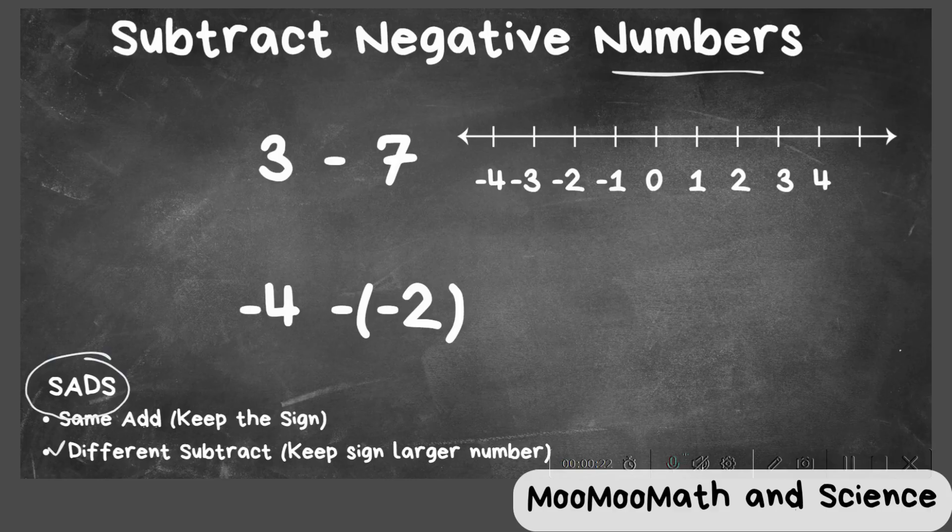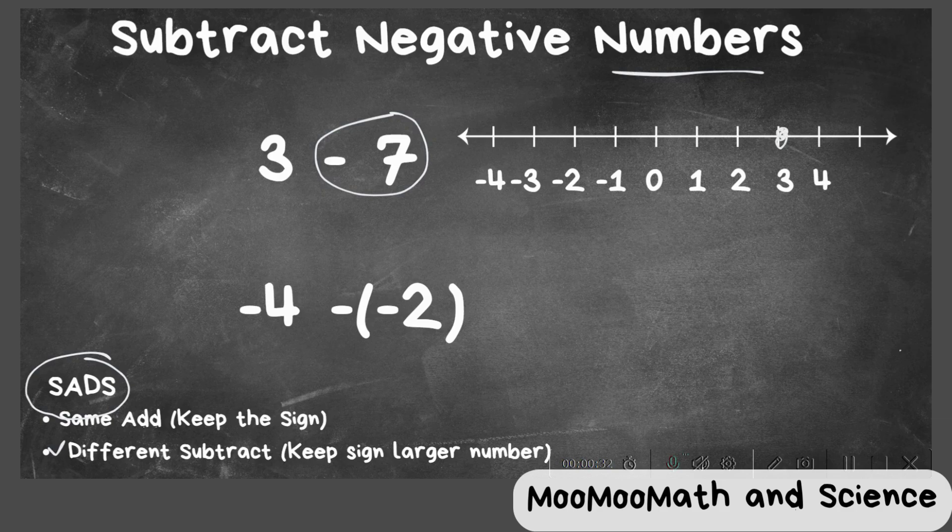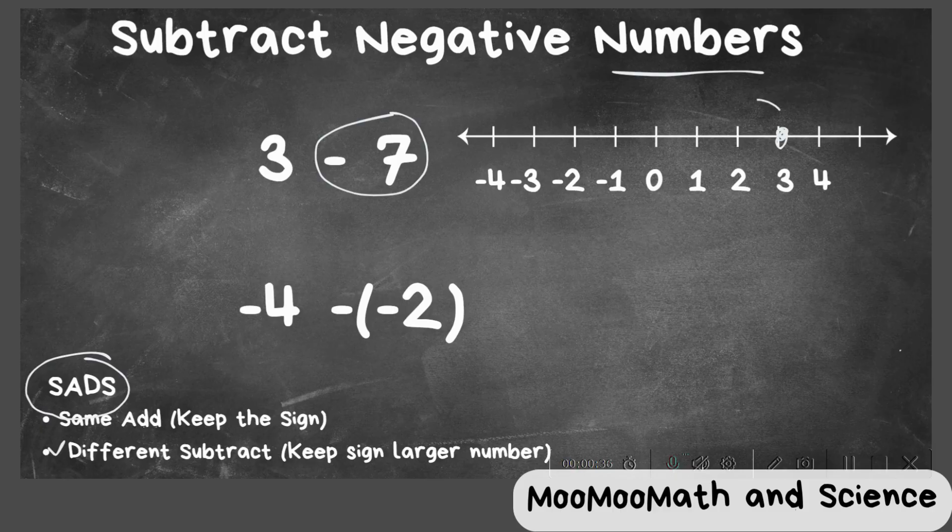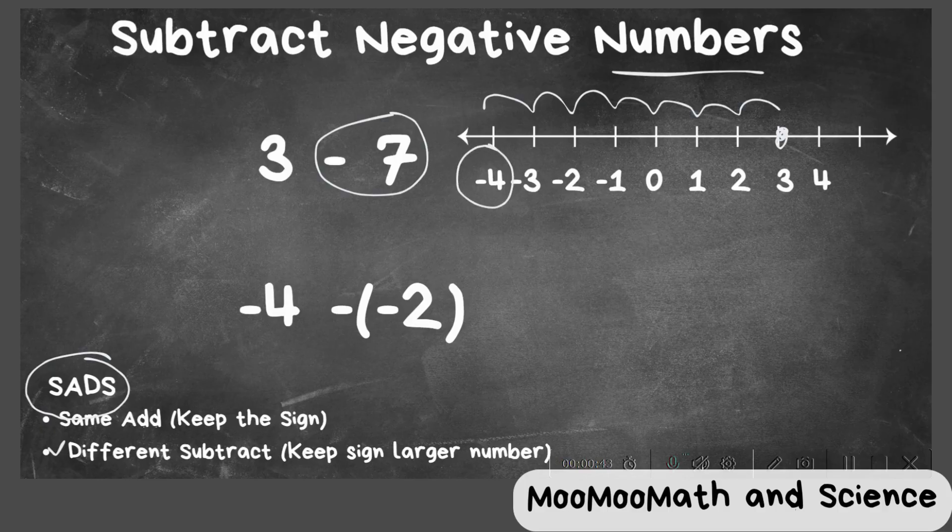So let's get started. We have 3 minus 7. You could say that this negative number is attached, but on the number line, you have 3 here and you're going to take 7 away. You're going to subtract, so you're going to move in this direction: 1, 2, 3, 4, 5, 6, 7. So that gives you negative 4.